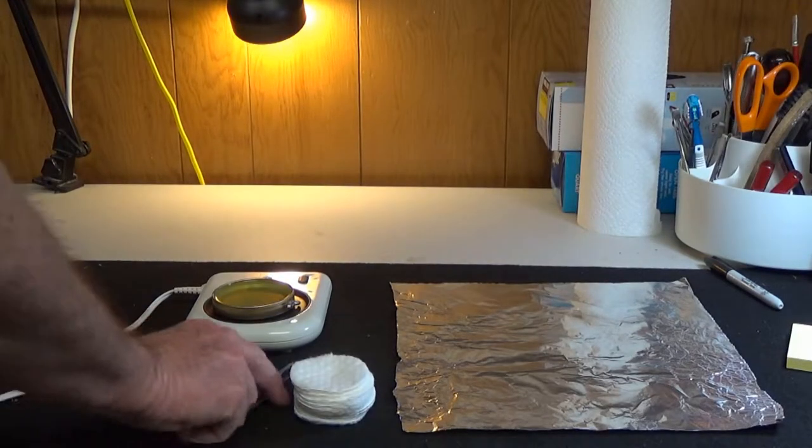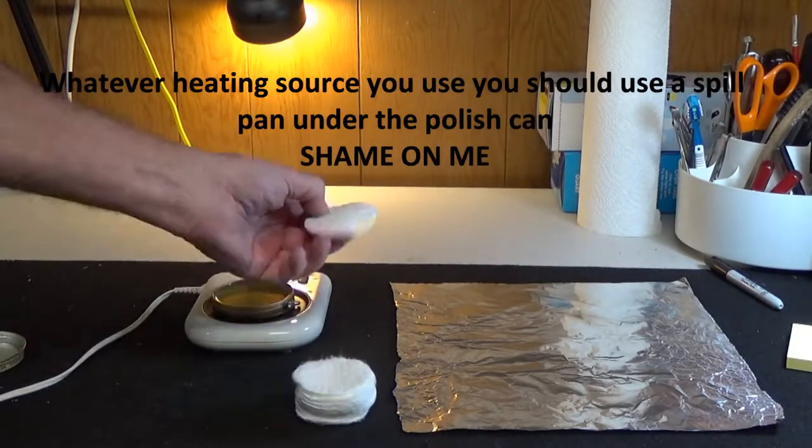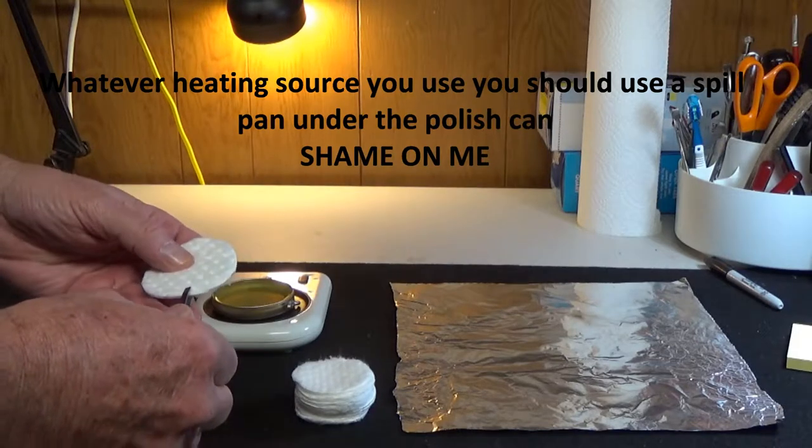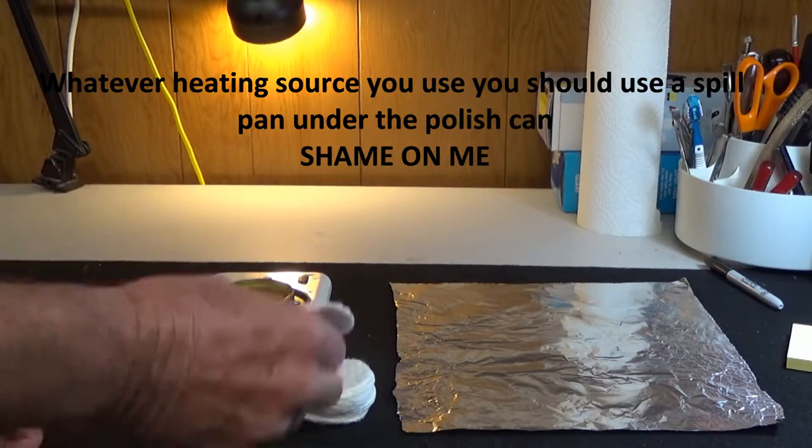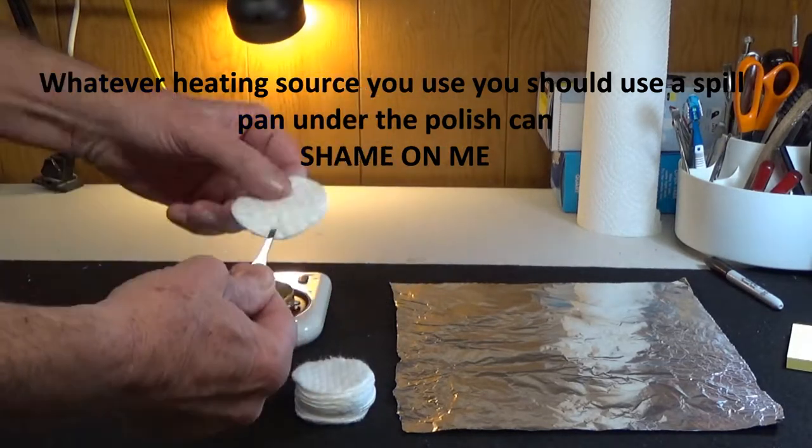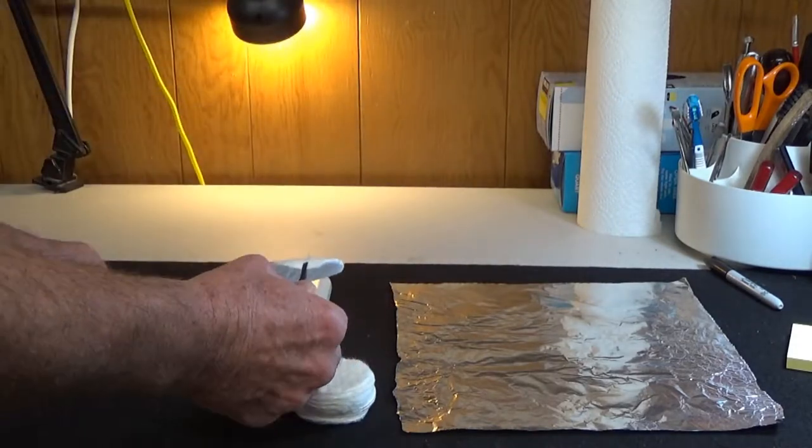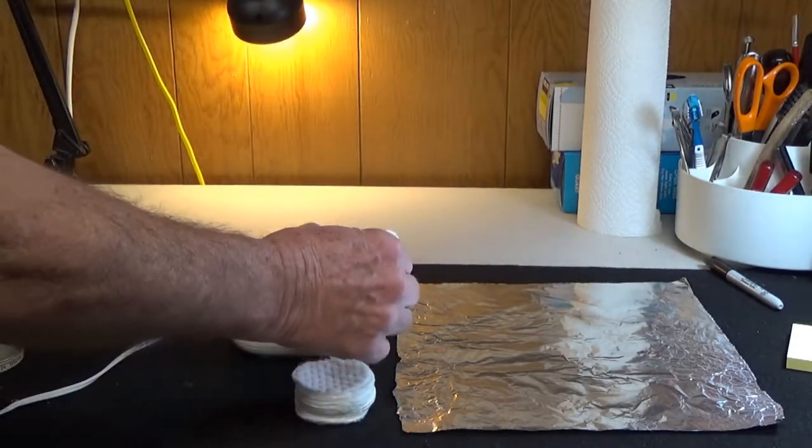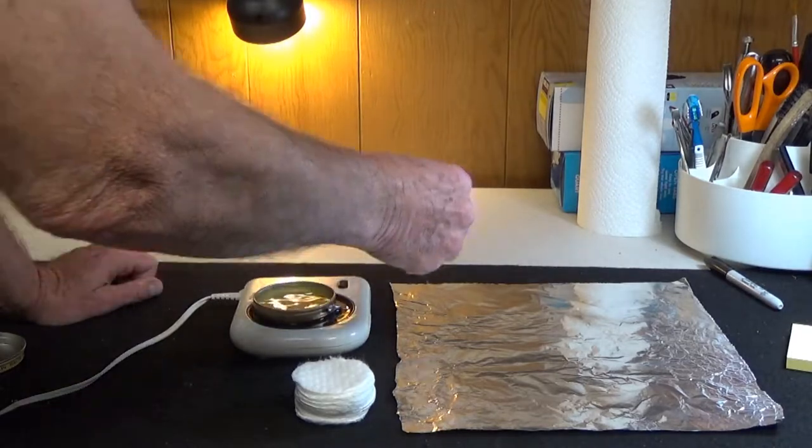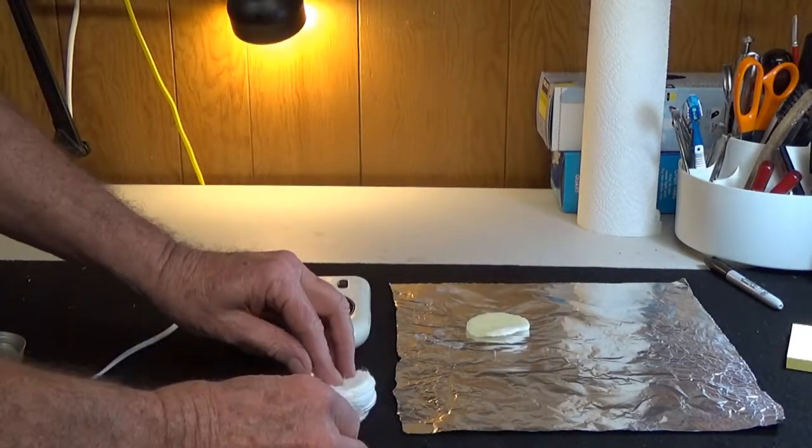Okay, the polish is melted. Now all we do is, just like you do with wax, just take a pair of tweezers, get it on the pad, dip it, put it on the foil.